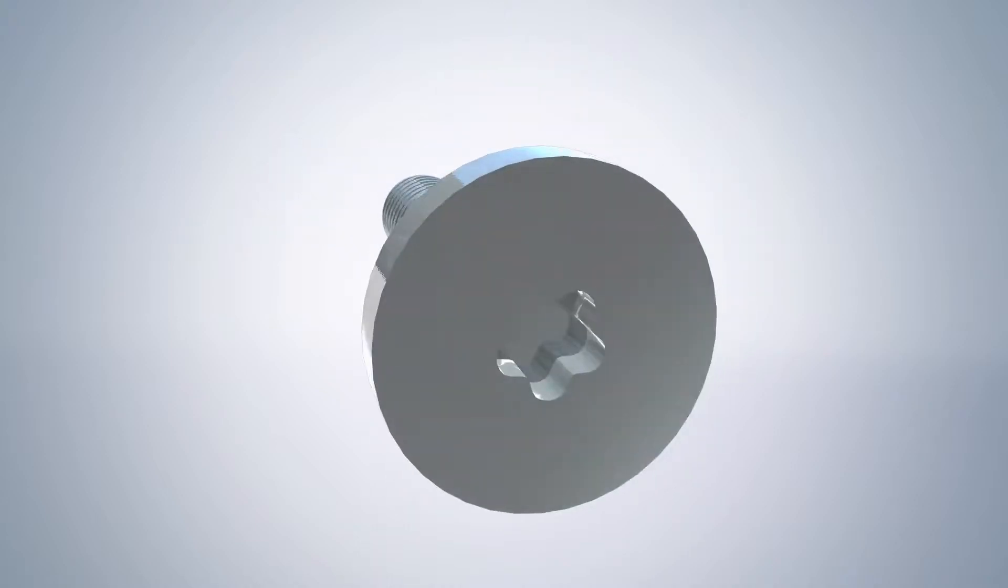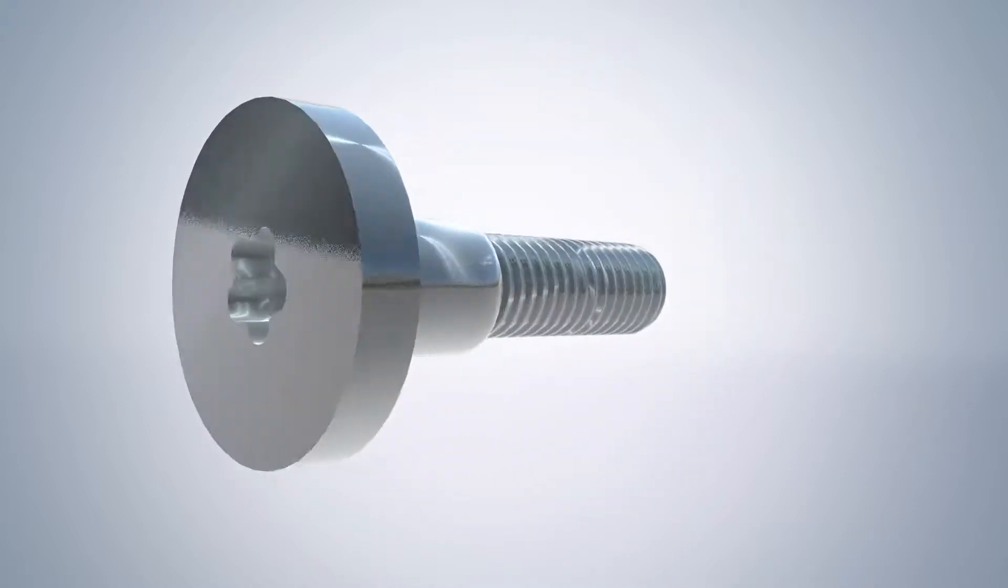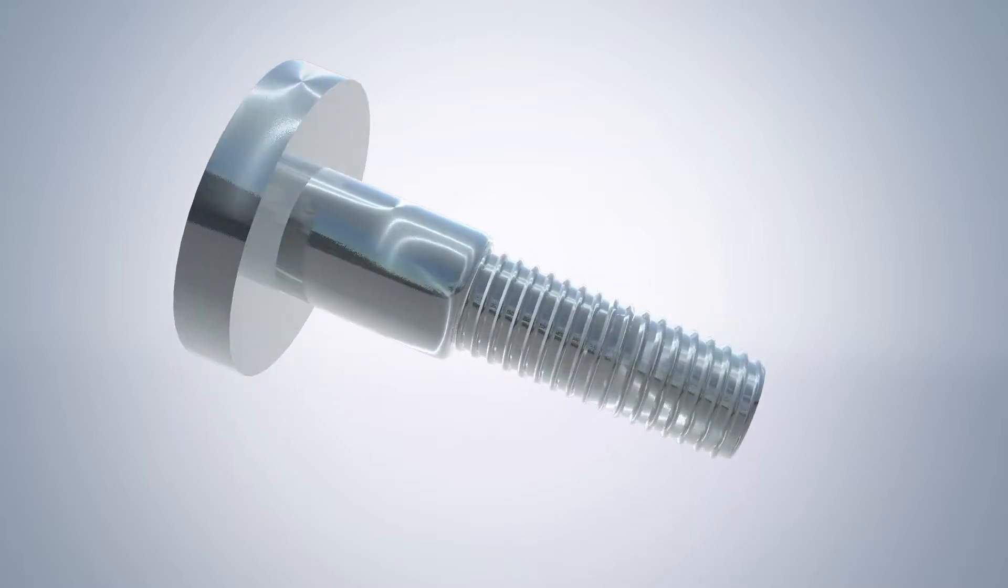Included in the kit is also a new pivot bolt made out of stainless steel to replace the original one should any damage occur from removal.